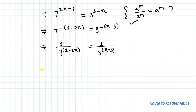Now by cross multiplication we have 3 to the power x minus 3 equals 7 to the power 1 minus 2x. Let's take this as equation 1.